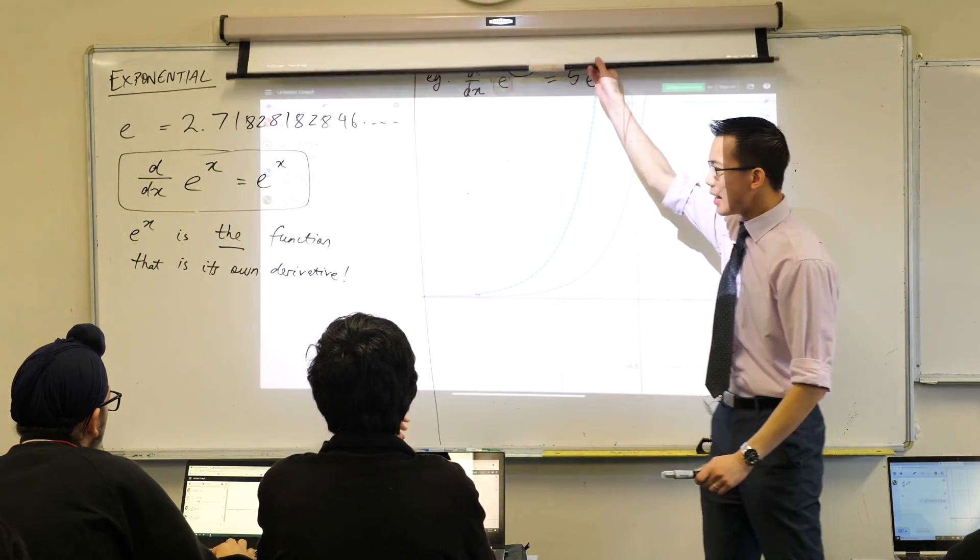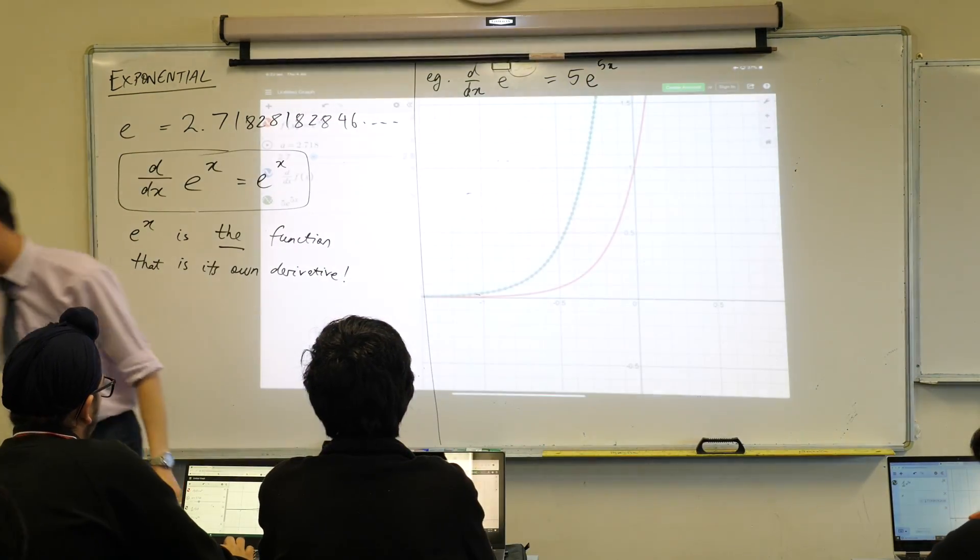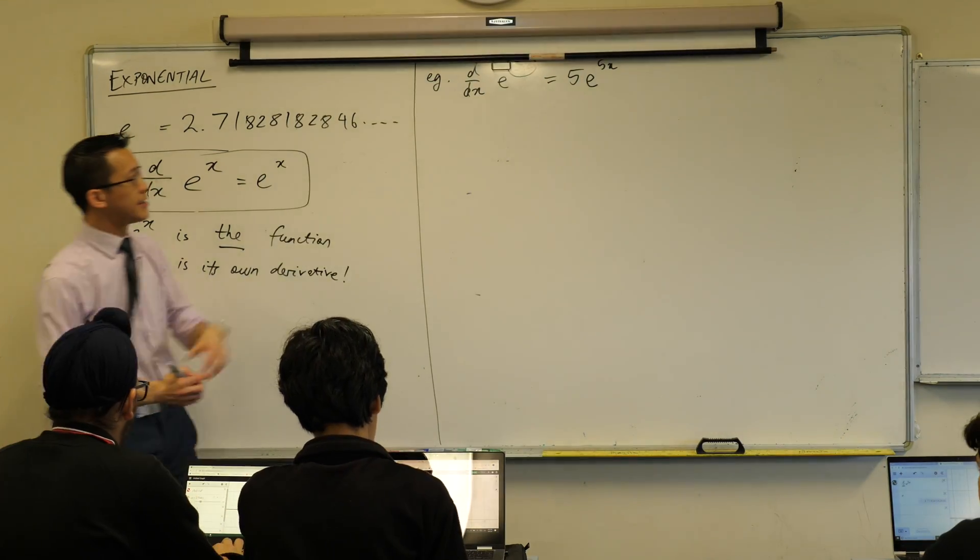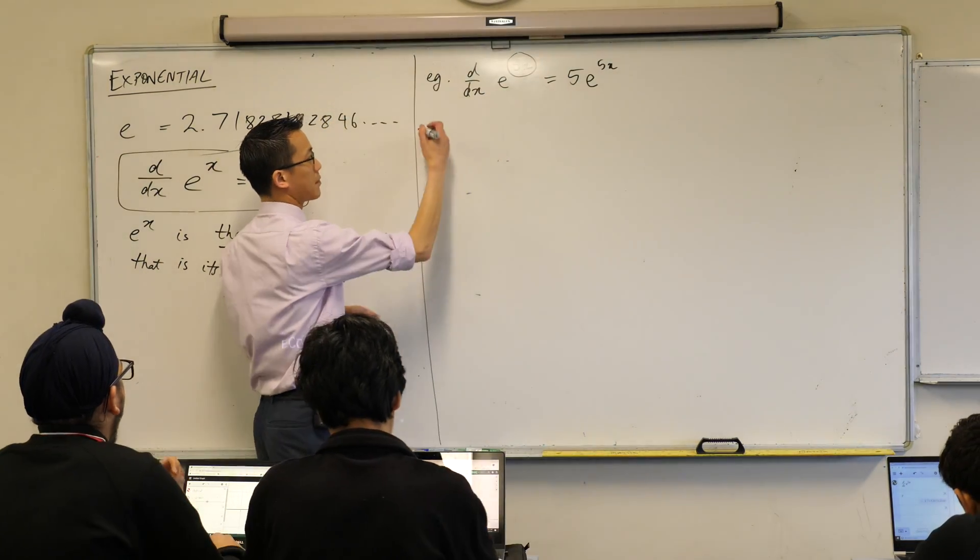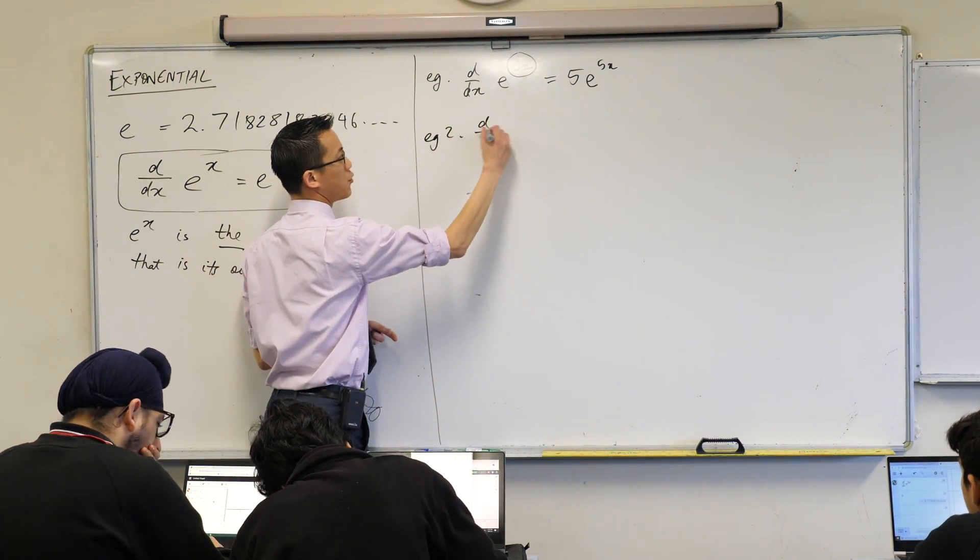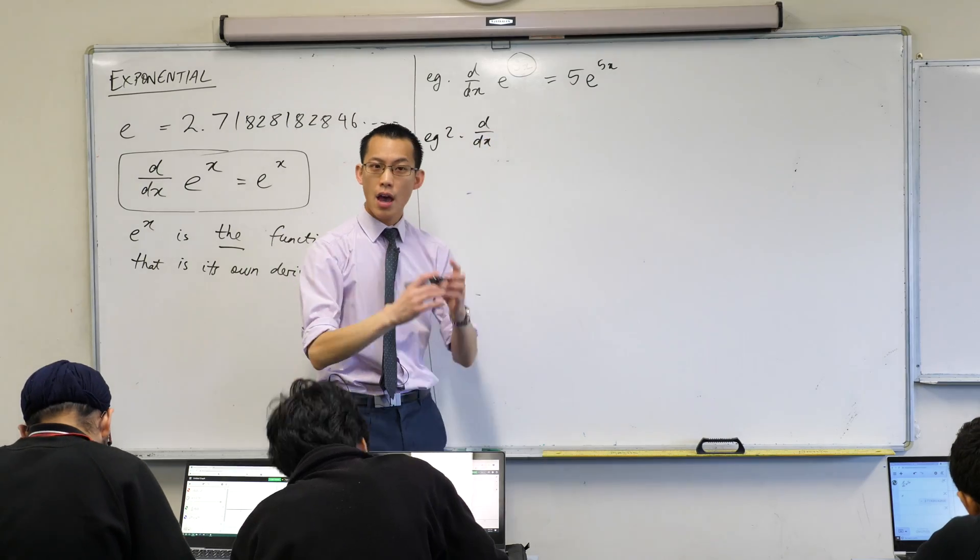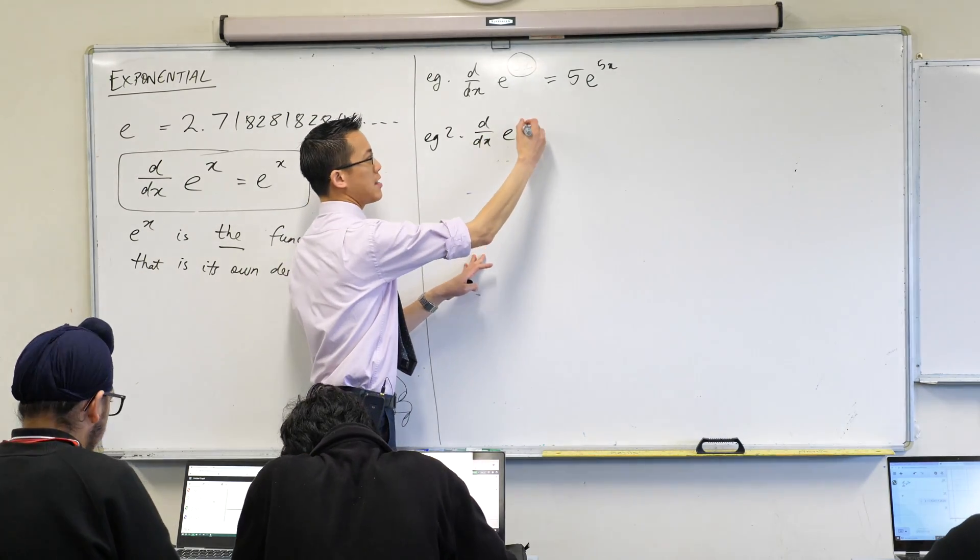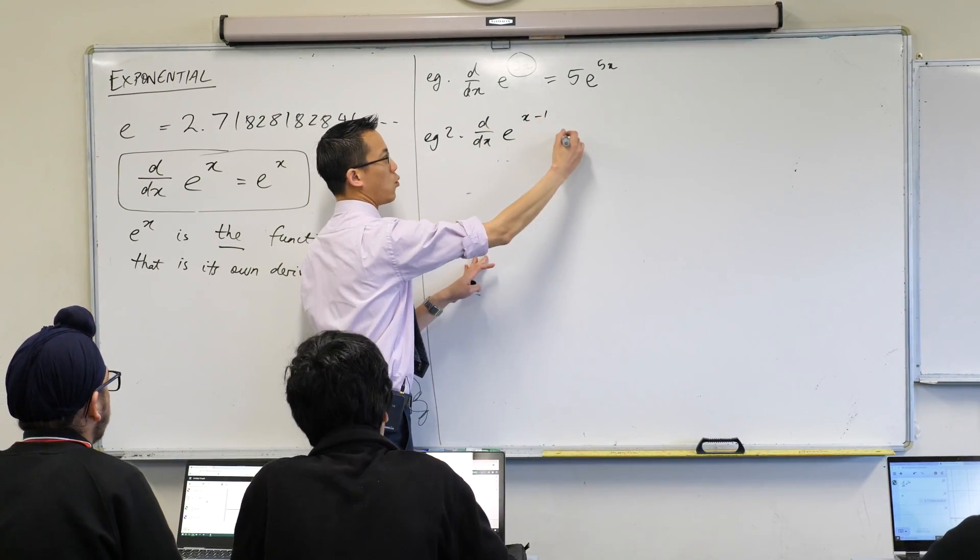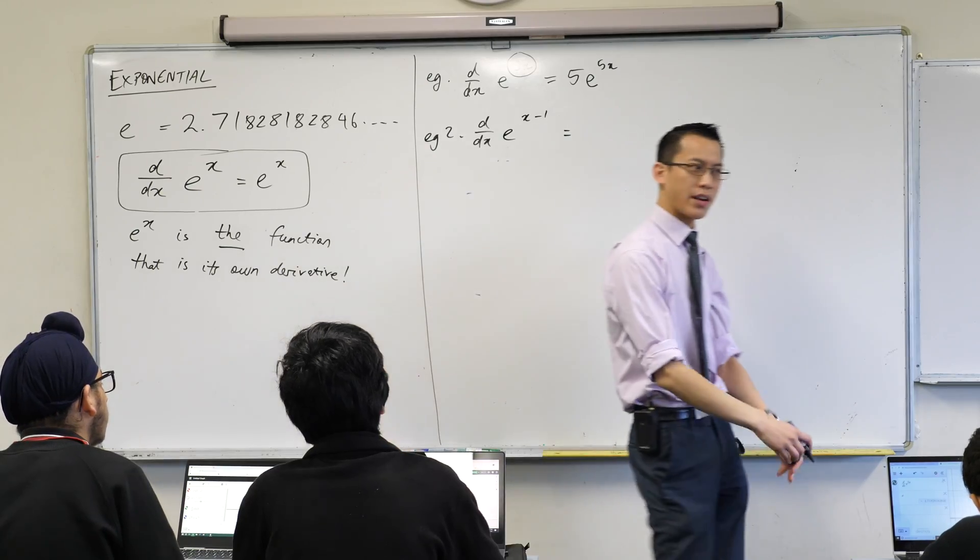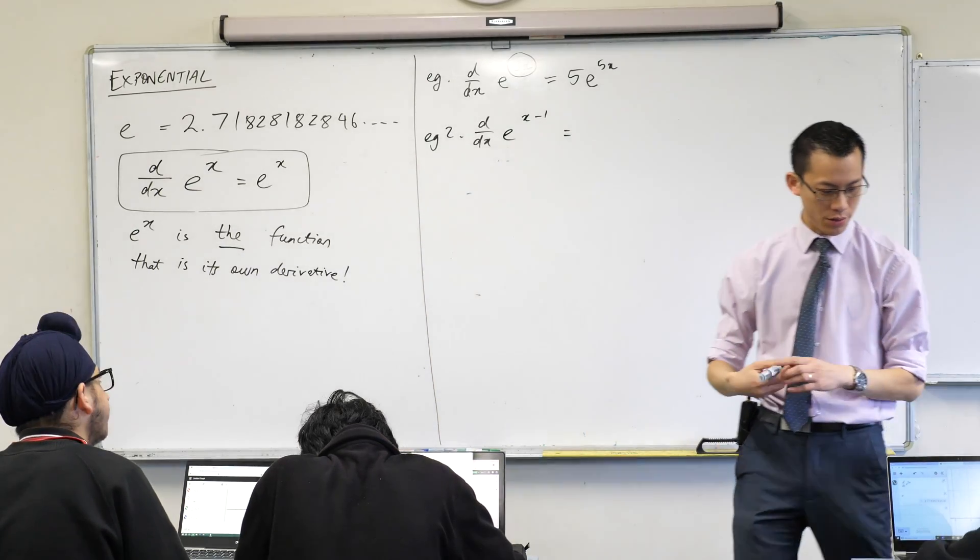Okay, let's try another one. And this time, I'm not going to do it up on the screen, I'm going to get you guys to test it out. But instead of the derivative of e to the 5x, can you tell me what the derivative of e to the x minus 1 is? Can you work out what that should be? Have a go, see what you end up with.